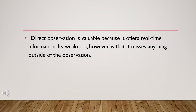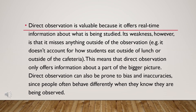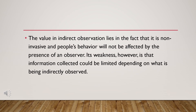Direct observation is valuable because it offers real-time information. Its weakness is that it misses anything outside of the observation window, meaning it only offers information about part of the bigger picture. Direct observation can also be prone to bias and inaccuracies since people often behave differently when they know they are being observed. The value of indirect observation lies in the fact that it is non-invasive and people's behavior will not be affected by the presence of the observer. Its weakness, however, is that information collected could be limited depending on what is being directly observed.